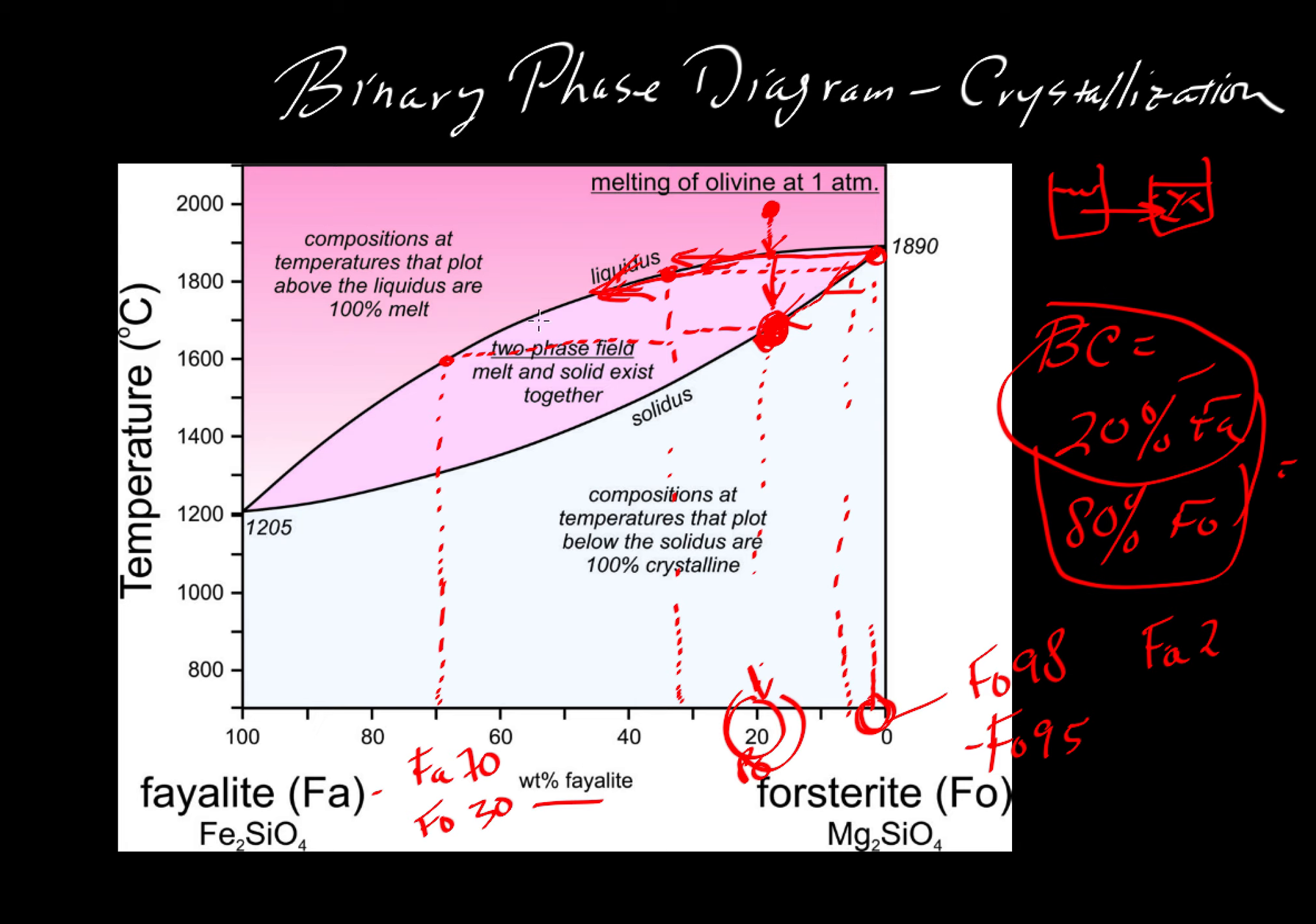What is the last little bit of liquid to form? Well we started out with a liquid that looked like this bulk composition here. We would have an infinite number of liquids that would evolve along that curve. The last little bit of liquid would be here. Now we have described the case of equilibrium crystallization.